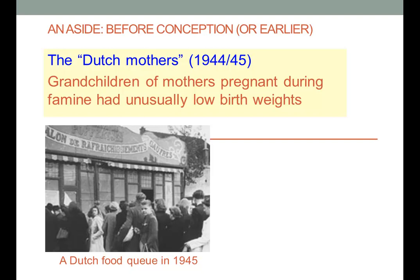Women who were pregnant during this time unsurprisingly gave birth to children of low weight. What was surprising was that 20 or 30 years later, when those children gave birth, their children were also of low weight. This led to the whole concept of epigenetics — the idea that nutrition and other factors can influence the expression of the genome. The Dutch Mothers study was very important.